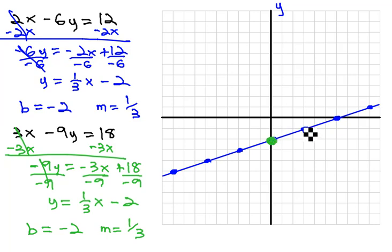So if we start at negative 2, and we rise 1, run 3, rise 1, run 3, rise 1, run 3, even go the other direction. What you might notice is happening as I connect these dots is how these two lines compare with each other.